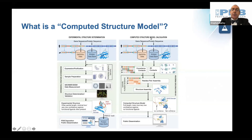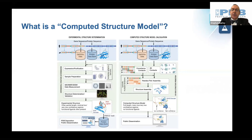In contrast, a computed structure model refers to predicted structures coming from artificial intelligence and machine learning methods that take advantage of both what's known about protein structures in the PDB and genomic data.